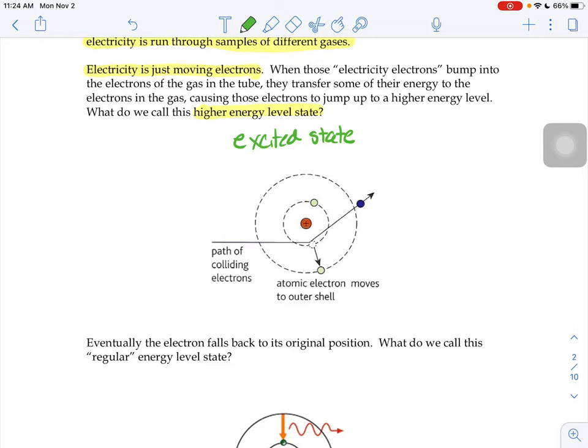When those incoming electrons bump into an electron in the atom of the gas that's in the tube, it causes the electron to jump up to that higher energy level state, like you see here, moving outward to an outer shell.